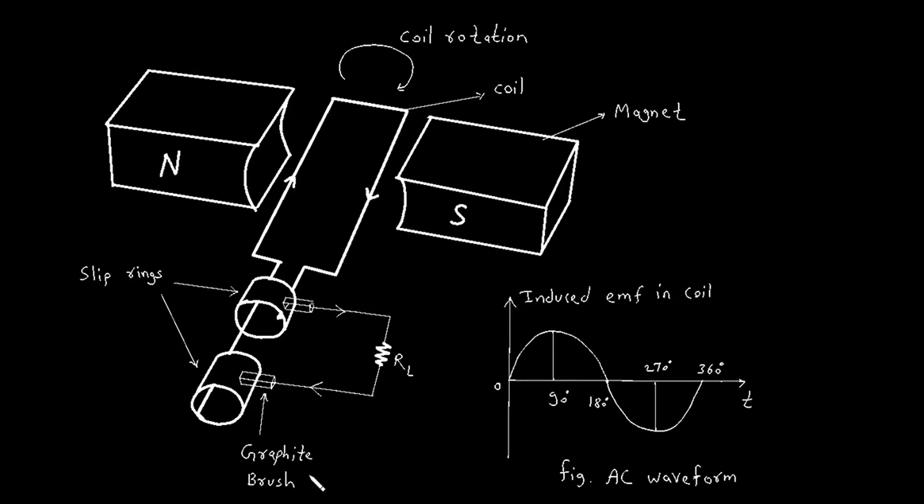As the coil rotates and the EMF is induced, the slip rings transfer this induced voltage to the brushes, which are connected to an external circuit, allowing the current to flow.